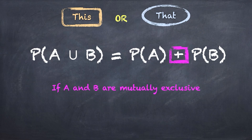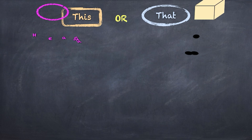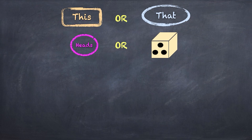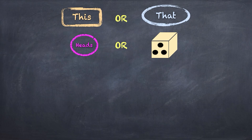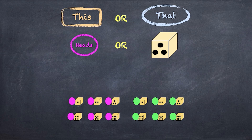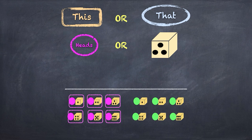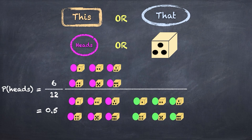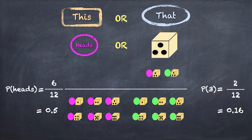So let's look at an example where the events aren't mutually exclusive. Now we spin a coin and we throw a dice. What are the chances that we get either a heads on the coin or a three on the dice? Note that this includes the possibility that we get a heads and a three at the same time — these two events are not mutually exclusive. There are 12 possible combinations of coin flips and dice rolling as our denominator. Six of those 12 possibilities include flipping a heads, so the chances of getting a heads is six over 12, or 0.5. And two of those scenarios include getting a three on the dice, so the probability of getting a three is two over 12, which is 0.16.